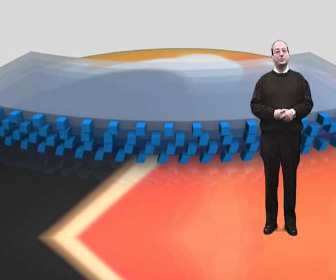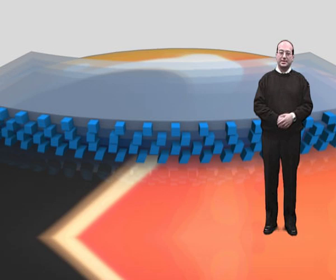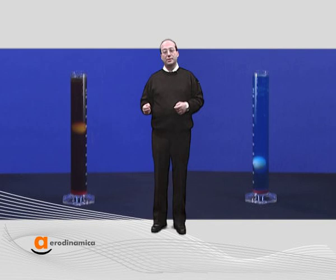It is always true no matter what type of material the surface of the object is made of. Only the surface roughness has a direct effect on the drag, and not the material. Looking back at the experiment, the different behavior of water and oil is due to their different viscosity.